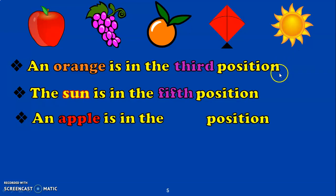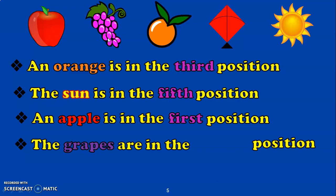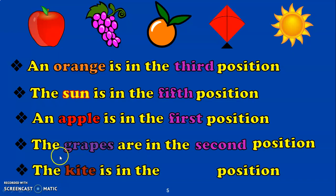An apple is in the dash position. Apple is in the 1st position — F-I-R-S-T. The grapes are in the dash position. The grapes are in the 2nd position. The kite is in the dash position. Counting — 1st, 2nd, 3rd, 4th. The kite is in the 4th position — F-O-U-R-T-H.